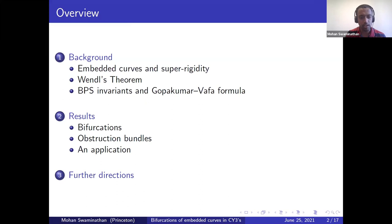In the second section, I will talk about our results. The first result will be about bifurcations in moduli spaces of embedded curves when we take a generic one-parameter family of almost complex structures. The second result will be about obstruction bundles and how their Euler numbers change under such bifurcations in some simple cases. Then I'll bring these two together for an application consisting of defining BPS invariants in some specific cases. Finally, I will end with describing some further directions we plan to take this research in.